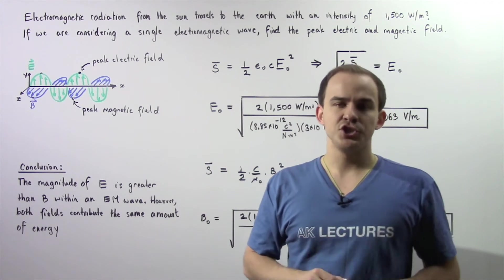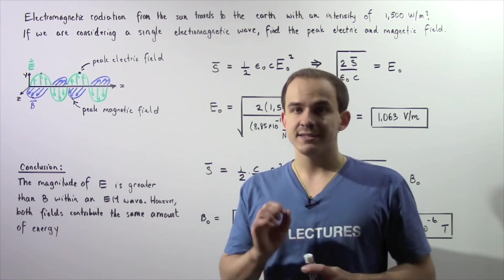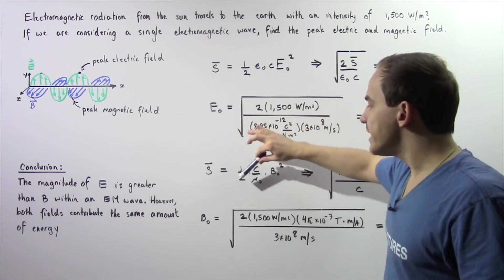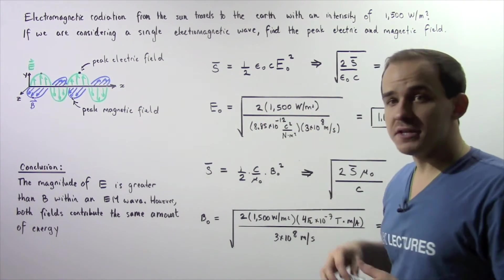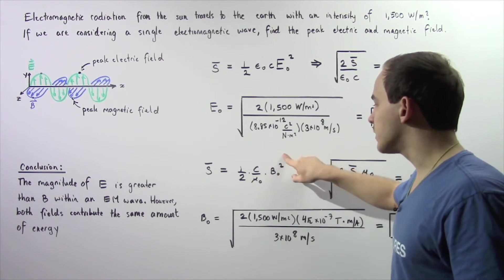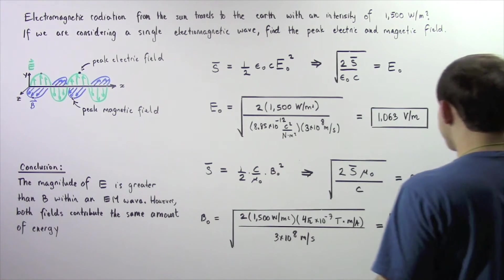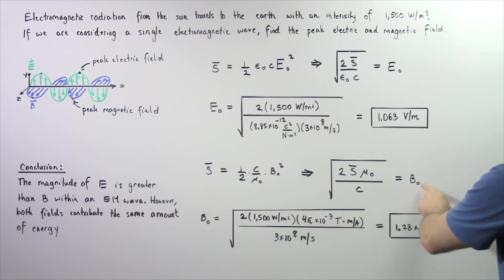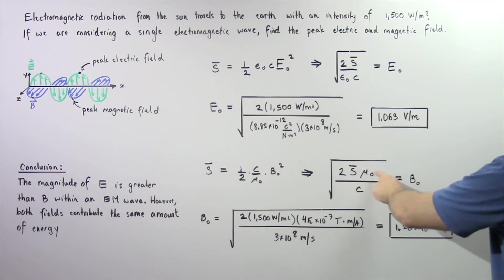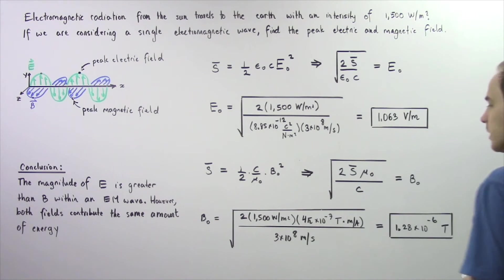Now let's find the peak magnetic field. The intensity of the wave is equal to one half multiplied by c, the speed of light, divided by mu naught, a constant, multiplied by B naught squared, where B naught is the peak magnetic field. Solving for the peak magnetic field, we get: B naught equals the square root of 2 multiplied by the intensity multiplied by mu naught divided by c.